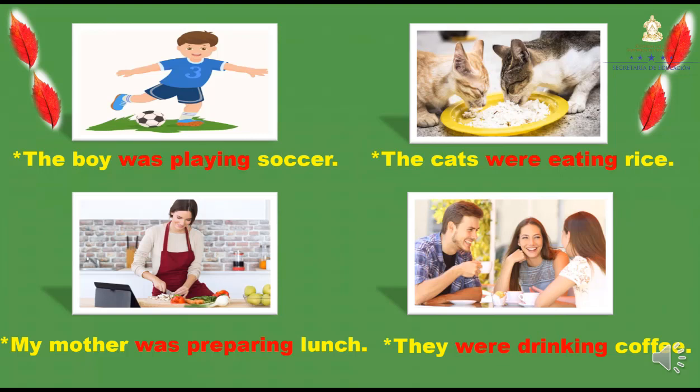Si observan, las del lado izquierdo están con was porque el was es para hablar en singular, o sea de uno. Los del lado derecho están con were porque estamos hablando en plural. Todas al inicio tienen su sujeto, luego el verbo to be, was or were, luego el verbo con -ing, y por último su complemento.